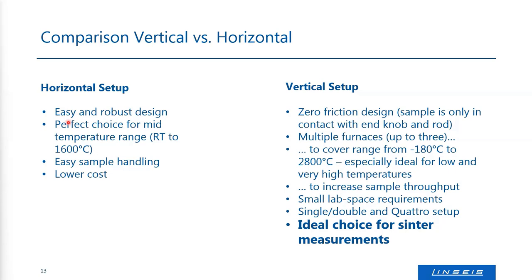In horizontal systems, samples are placed in a sample carrier — a half tube. When the sample is placed inside and moves, there is friction against the sample holder, which is not the case in a vertical setup. Therefore, it is better to use a vertical system for sintering measurements.